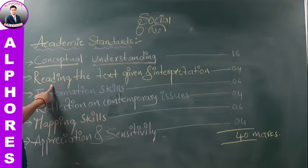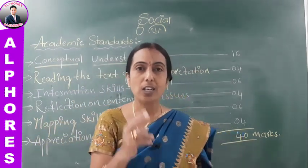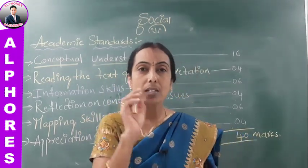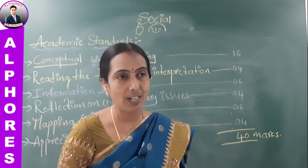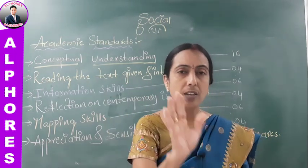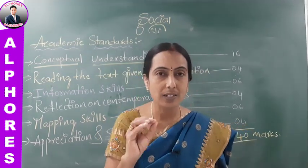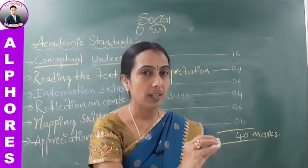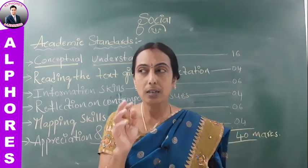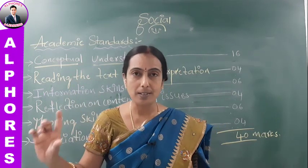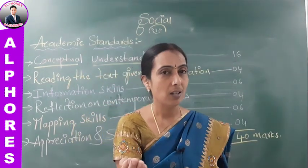AS3 — information skills — is the easiest part, carrying six marks. Sometimes a table is given with four questions below it — two questions are direct pick-and-write type, one involves a little calculation, and the fourth is analytical requiring concept knowledge. It is not compulsory they always give four questions; sometimes they give an information table or graph and ask you to prepare a paragraph, express your opinion, or interpret — so you should be ready for everything.